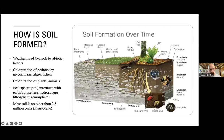Interestingly, most of the soil on Earth is no older than 2.5 million years old, largely due to the Pleistocene — the series of ice ages from 2.5 million to about 11,000 years ago. Huge glaciers advanced, covered everything, then receded, and new soils formed repeatedly through that process.